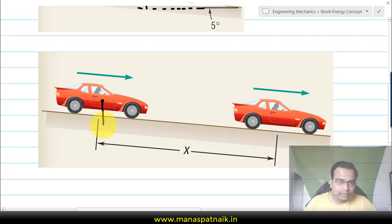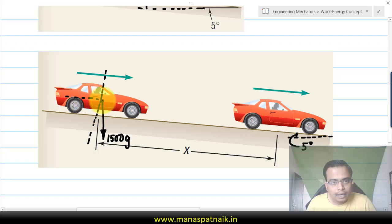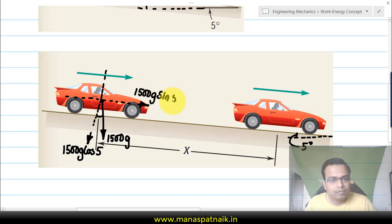The weight of the car will obviously be acting in the downward direction. How much is the weight? Well, the mass is 1500 so the weight is obviously going to be 1500g. This is the incline, and this angle is five degrees. So you're going to have two components: this over here will be the cosine component, so 1500g cos 5, and there is one more force assisting the car in traveling downhill, that's 1500g sin 5. These are the components of the weight.